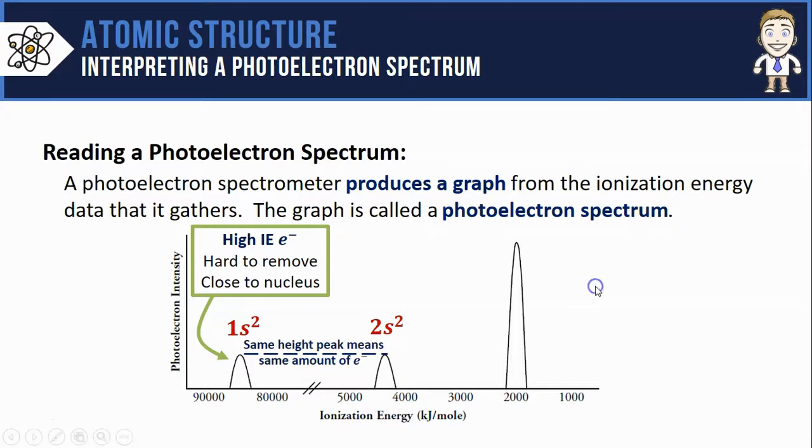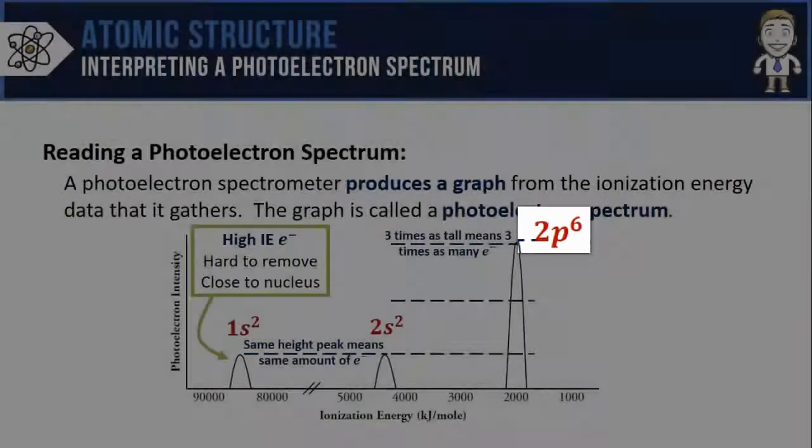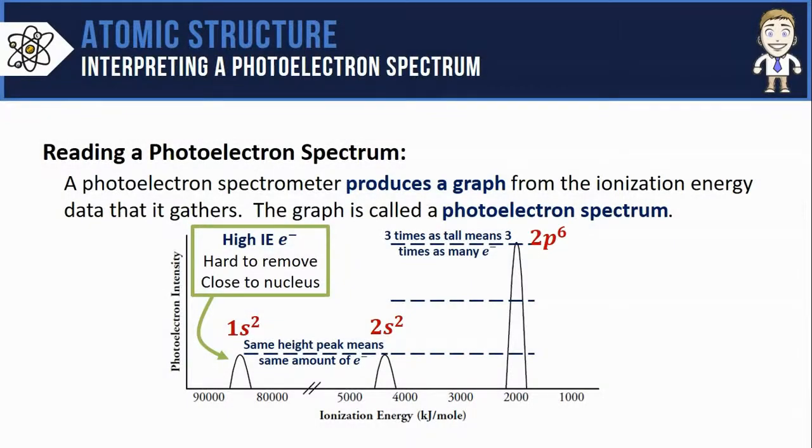And for our final peak, you might notice that it's much taller. In fact, it's exactly three times as tall. Three times as tall means three times as many electrons as these first two peaks, and since they contained two electrons, this one is representing six. So you might expect that this peak represents the 2p orbitals containing six total electrons. Since this is 10 electrons total, we can also say that this is the photoelectron spectrum for neon.